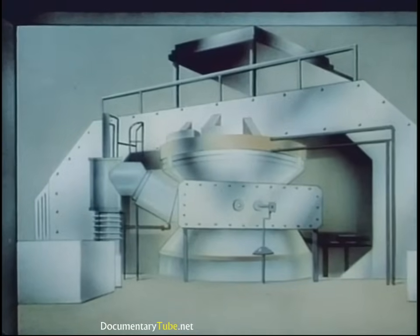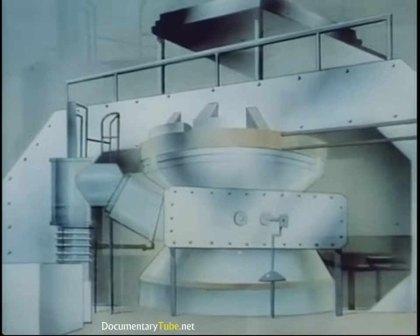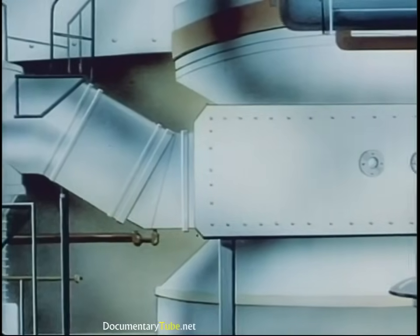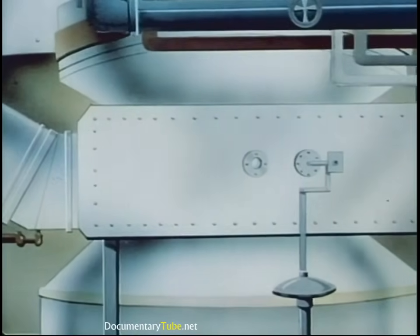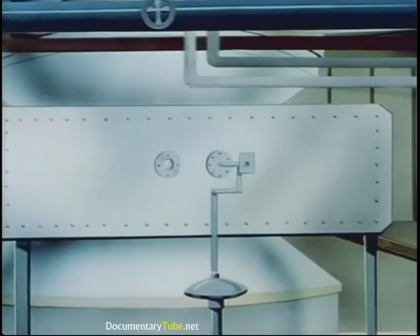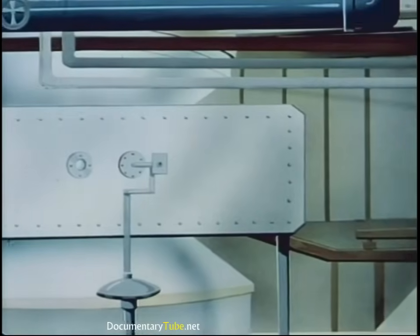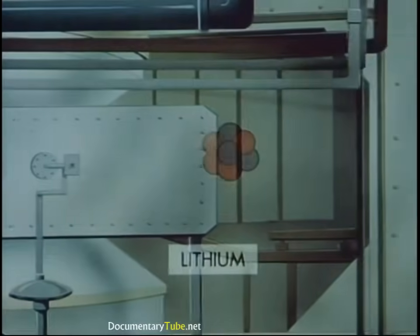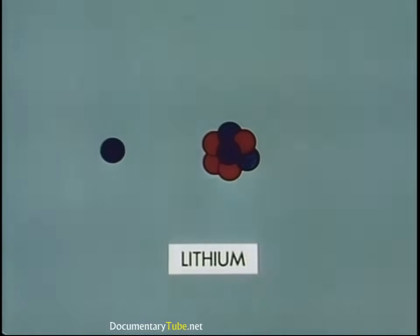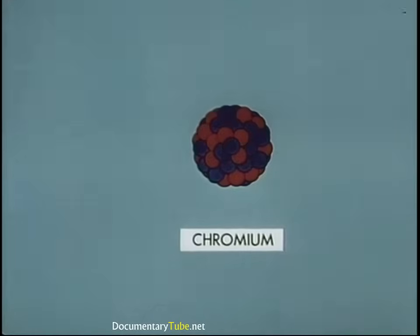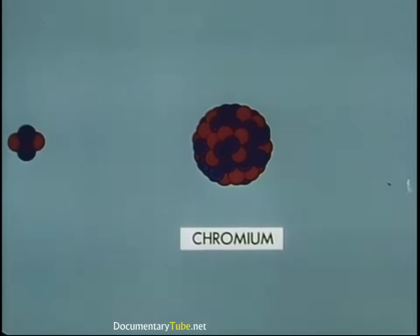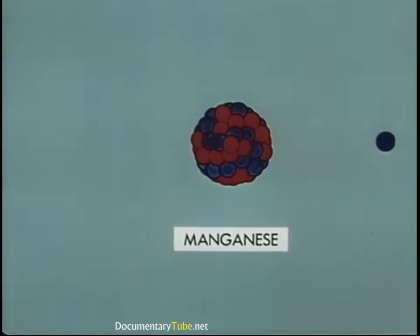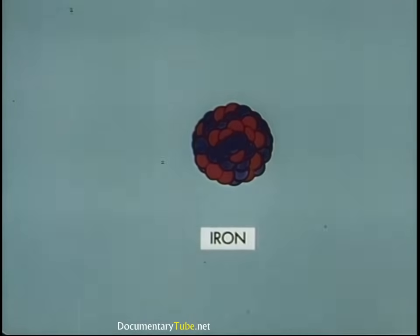So far, we've been watching natural radioactivity. Man has stepped into the act, however, and in some cases outdone nature. Using as his guns cyclotrons and other accelerators, and employing hydrogen and helium nuclei, neutrons, protons, electrons, and other minute bullets, he has made stable matter unstable, producing radioactive isotopes of many elements. He transmutes lithium into helium with a hydrogen nucleus as the projectile. By striking the nucleus of a chromium atom with a helium nucleus, he changes it into radioactive manganese with the emission of a proton. Manganese, in turn, decays to iron with the emission of a beta particle and gamma ray.